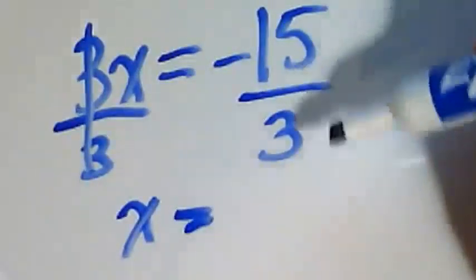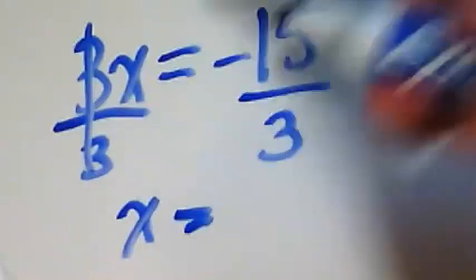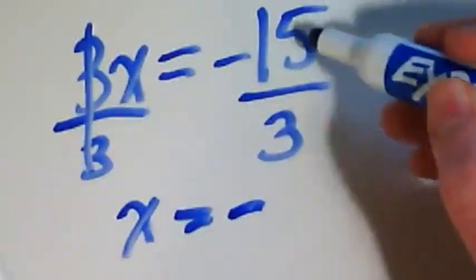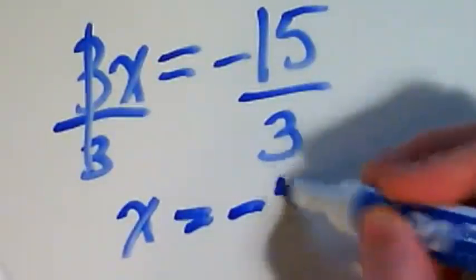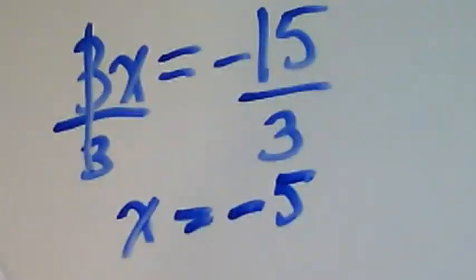Negative 15 divided by positive 3 gives us a negative, and 15 divided by 3 is 5. So x is equal to negative 5.